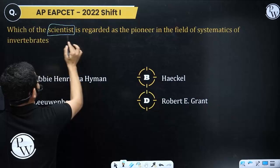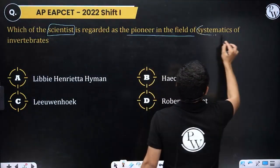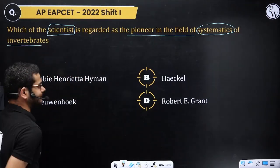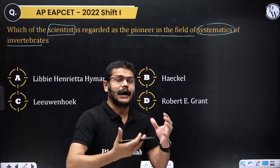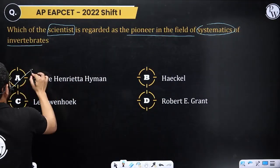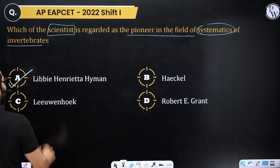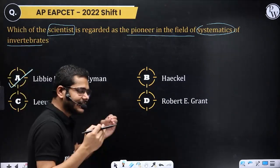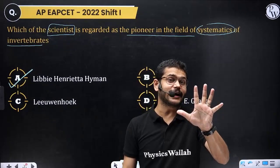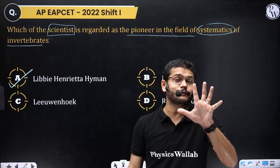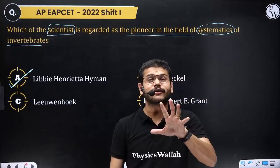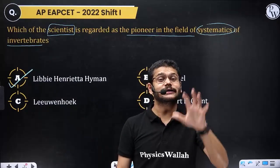Next question from EAPCET 2022 Shift 1: Which of the following scientist is regarded as the pioneer in the systematics of invertebrates? The answer is Libbie Henrietta Hyman. She wrote six volumes of books on invertebrate systematics, called the books written with golden letters.